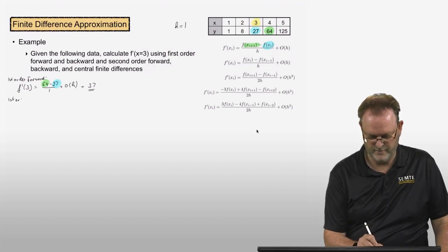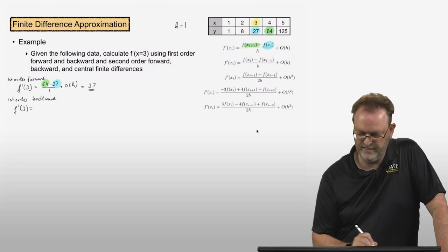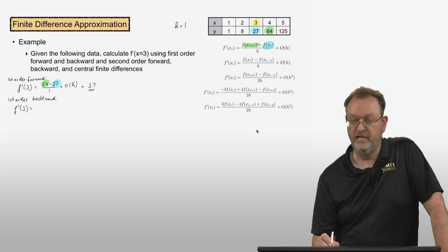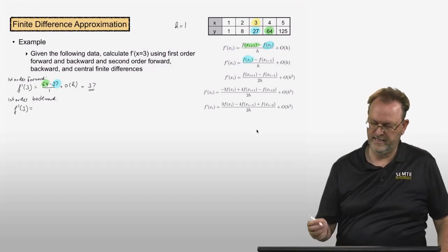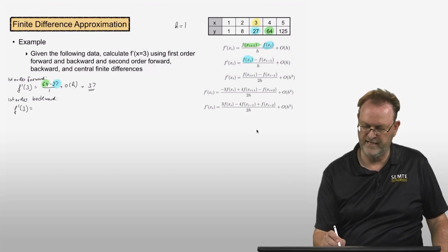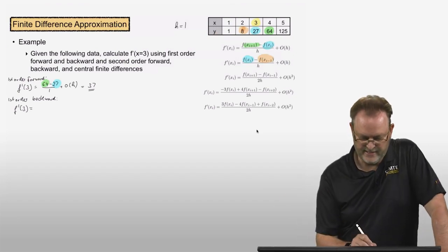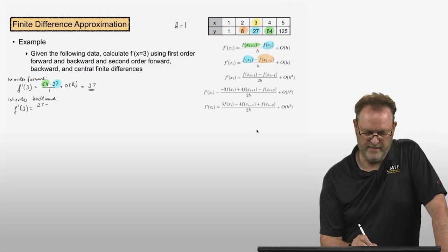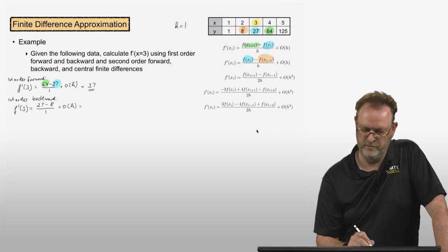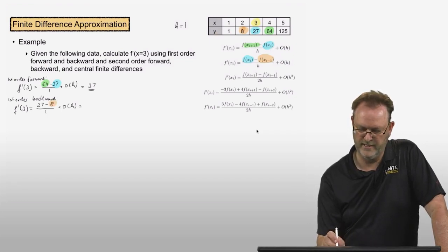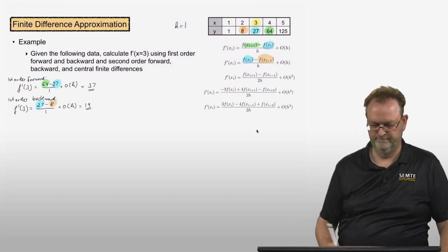For first order backward: f prime of 3 equals f of xi minus f of xi minus 1 divided by h. f of xi is 27 and the neighbor to the left is 8, divided by h equal to 1. So 27 minus 8 equals 19.